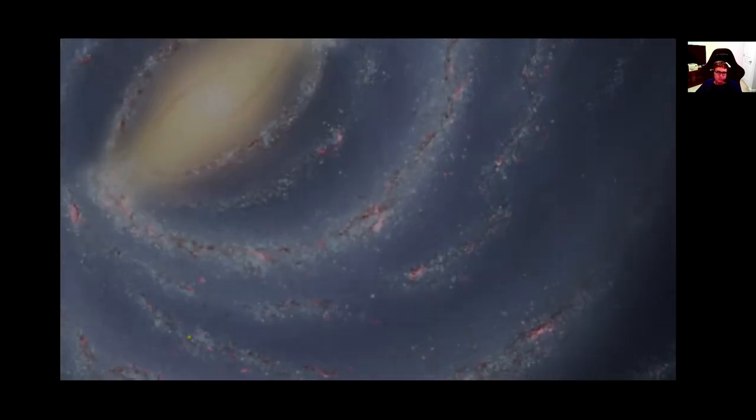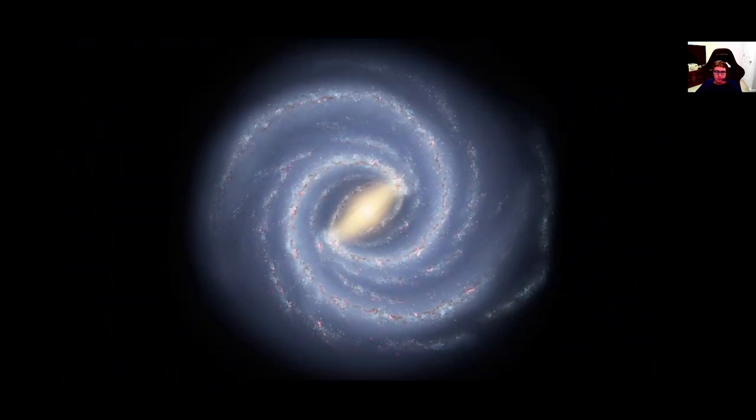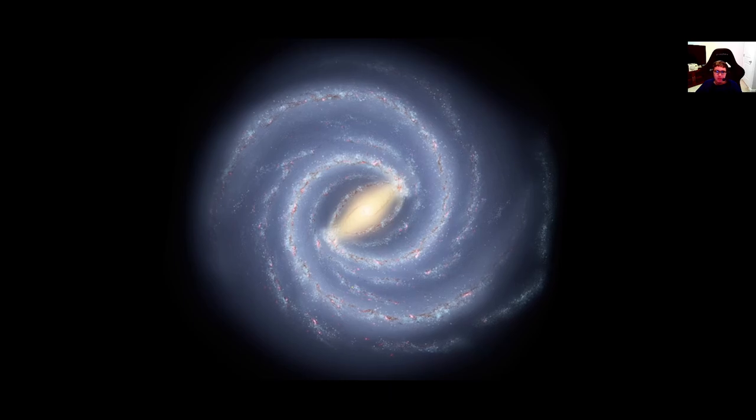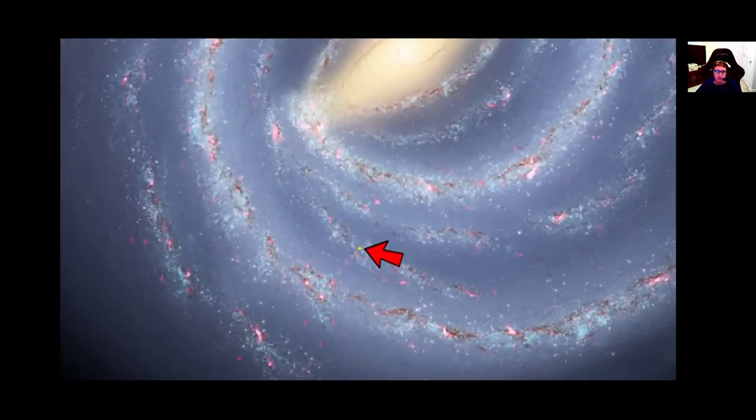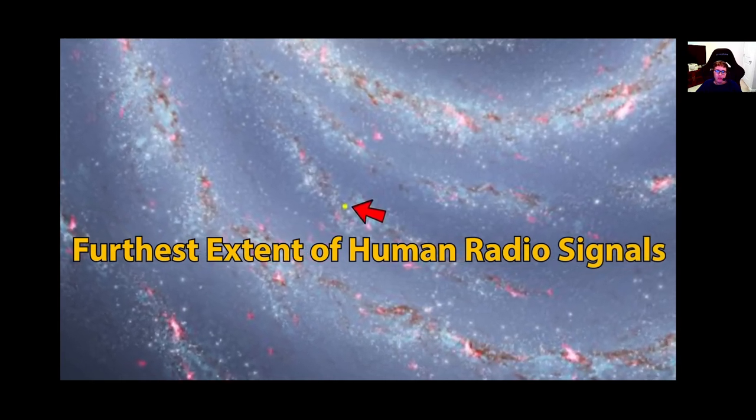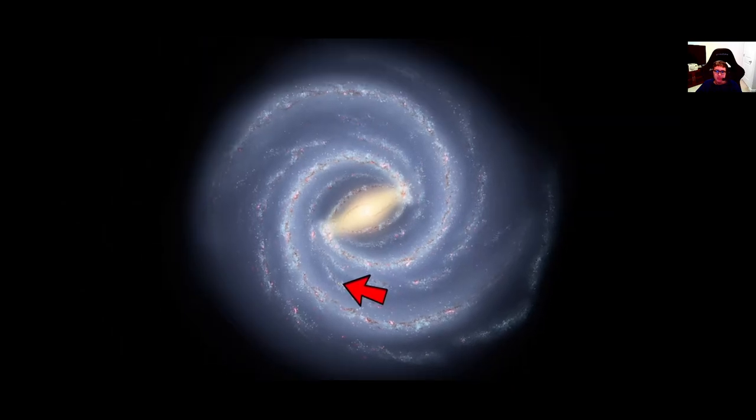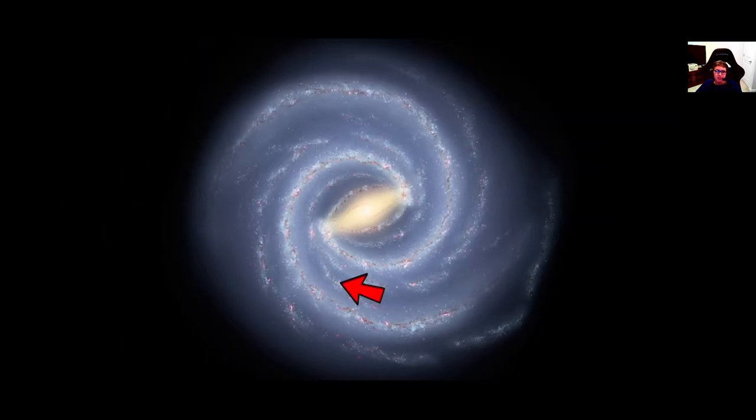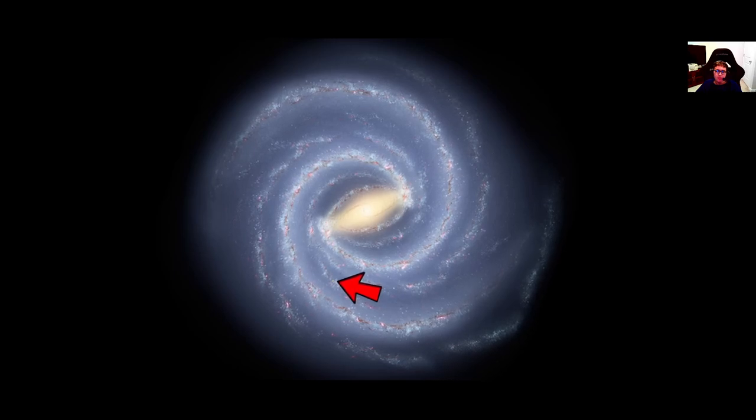When we zoom out even further, we can see the entire Milky Way galaxy. Inside of which Earth is located right here. This yellow dot is the furthest extent of humanity's radio broadcasts throughout history.